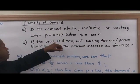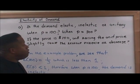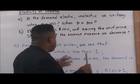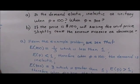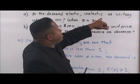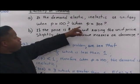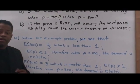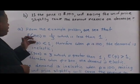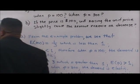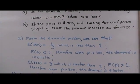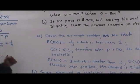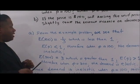Also, if the price is $100, will raising the unit price slightly cause the revenue to increase or decrease? Let's start with part A. From the previous example, E at 100 equals one-third — we got 100 over 400 minus 100, which gives us one-third. That makes E of P less than one.